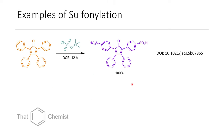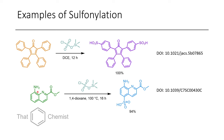In another example, they observed quantitative conversion to a disulfonylated product, whereas the other two benzene rings didn't react at all. Finally, in the case of a quinoline aniline, they observed a single para-selective transformation to the sulfonic acid, with no ortho reactivity observed.